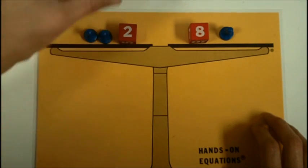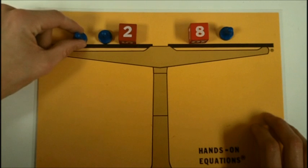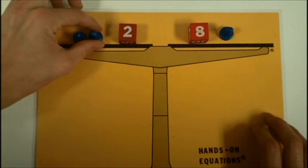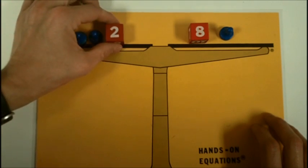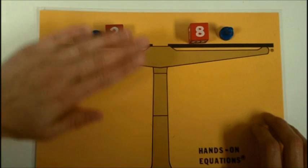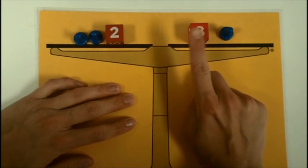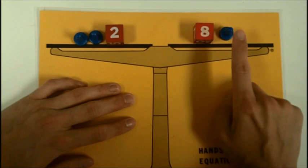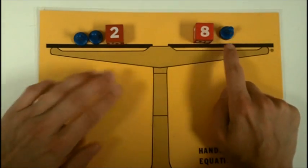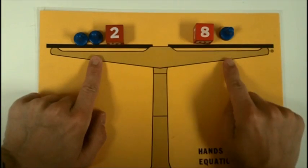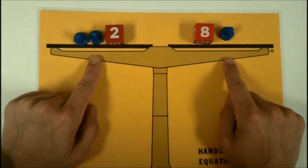So, if the pawn was worth 1, this side is worth 4. Over here, if this is 8 plus 1 more would be 9. Since 4 does not equal 9, the pawn can't equal 1.